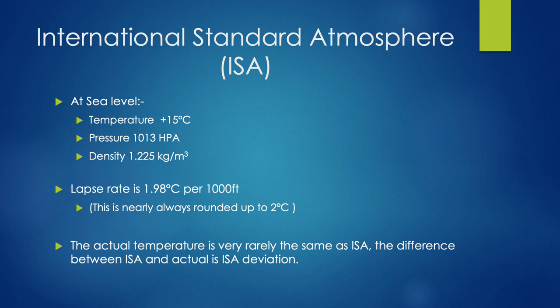The ISA gives us a comparison. It assumes certain parameters based at sea level: a temperature of plus 15 degrees Celsius, a pressure of 1013 hectopascals, and an air density of 1.225 kilograms per cubic metre. What we can do is assess our actual atmosphere compared to this datum, and that can give us some indication for many things.